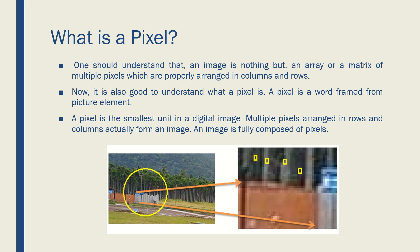What is a pixel? A pixel is the fundamental component of any image. An image is nothing but an array or matrix of multiple pixels — it is like multiple pixels come together to form an image. An image has got multiple pixels, and the pixel is the fundamental component of an image. I have taken a picture here which has got lots of trees and greenery, and this is all composed of pixels.